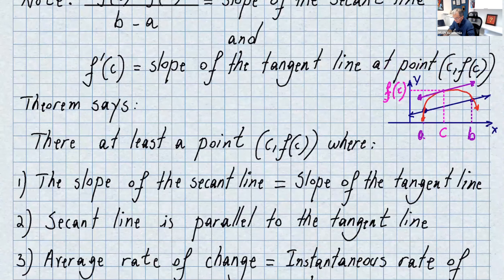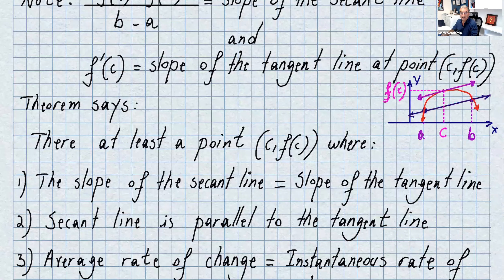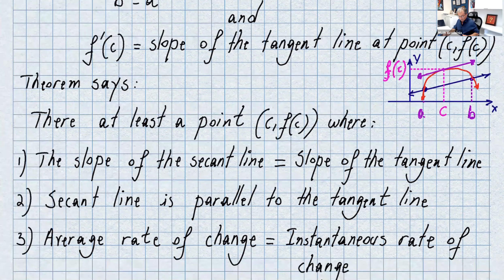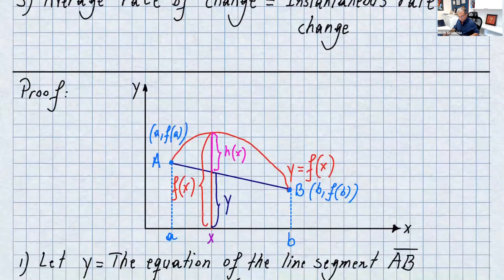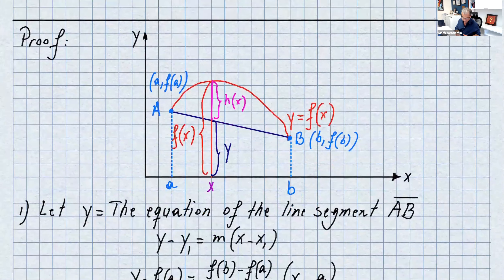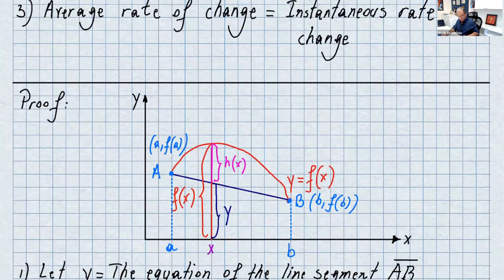So here I try to show it graphically. This is the function, and that's the secant line. There is a point c where the secant line and the tangent line are parallel — if two lines are parallel they have the same slope. Or, as an analogy: if you drive from point a to point b, there is a moment where your instantaneous velocity equals your average velocity. That is, instantaneous rate of change equals the average rate of change. Now let's go over the proof.